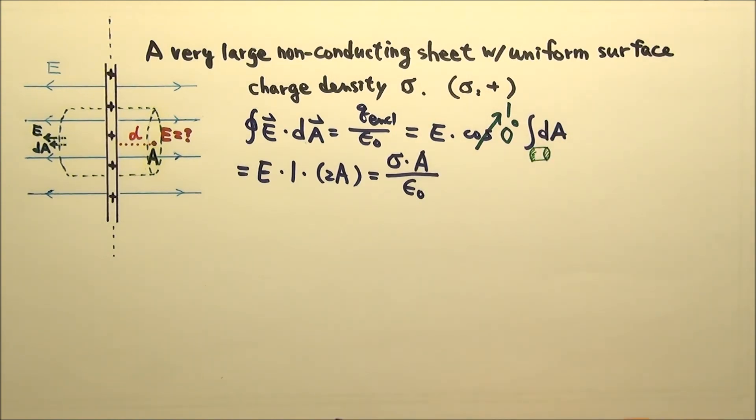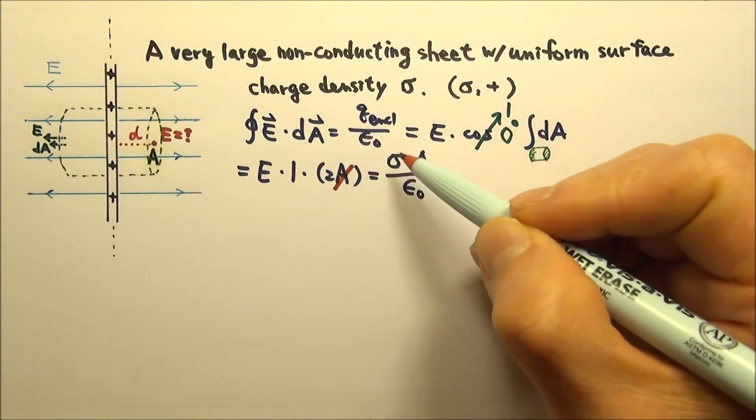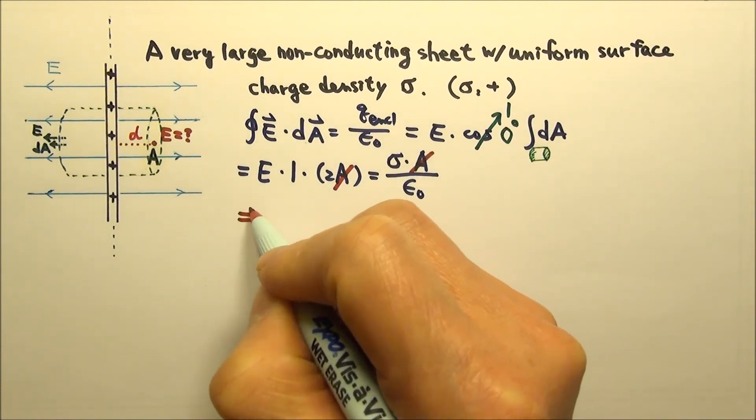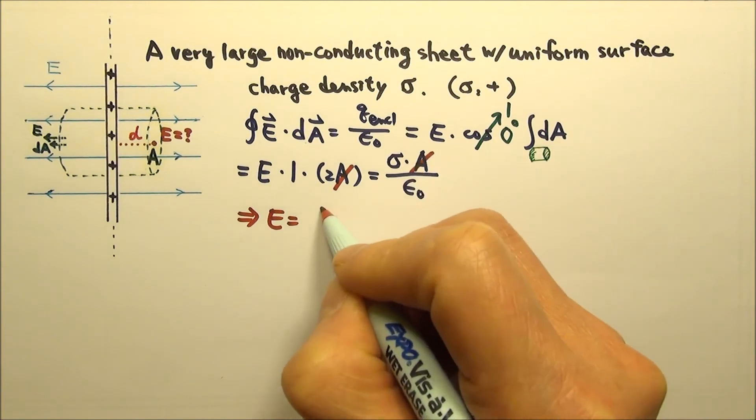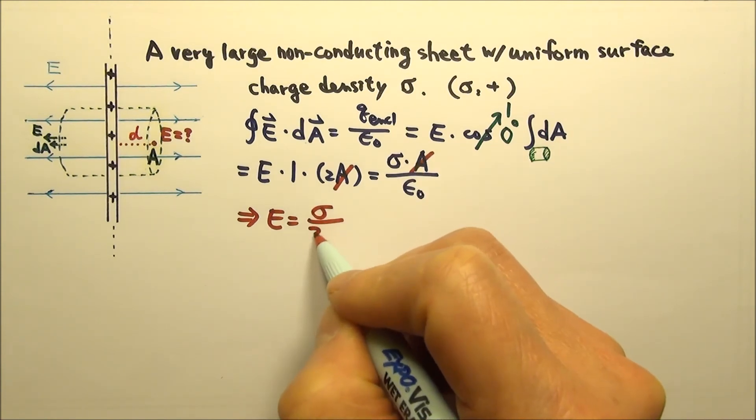As we expected, the arbitrary choice of area A does not affect the electric field. So the electric field is sigma over 2 epsilon 0.